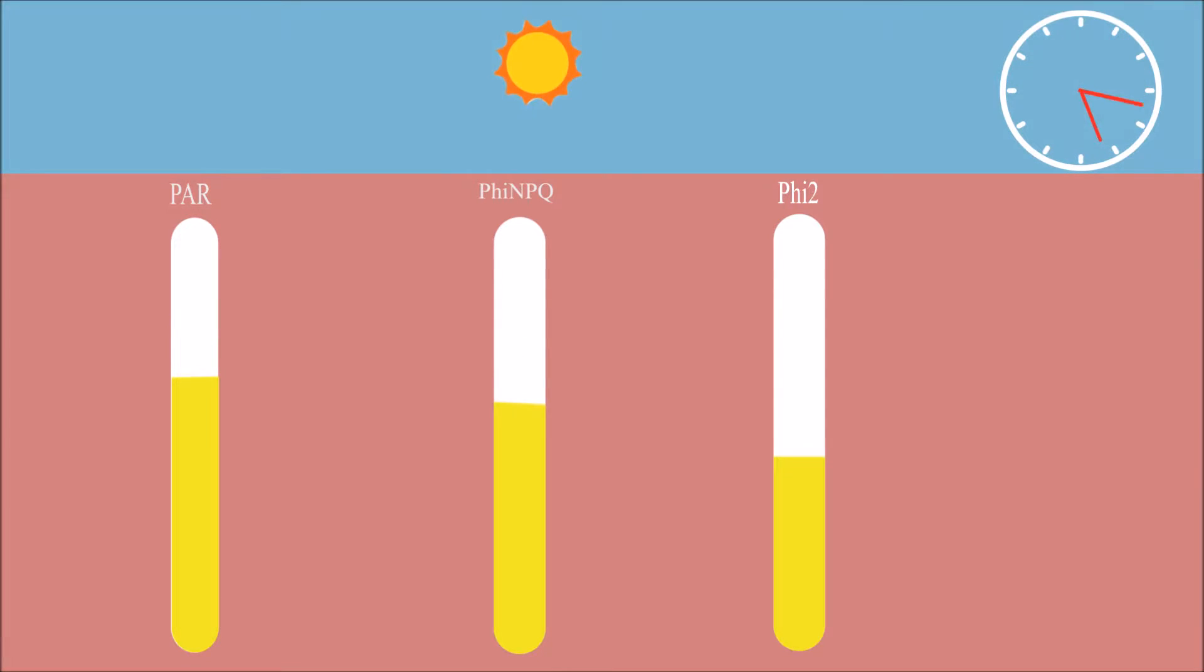It is important to note that the degree to which light intensity affects each of these parameters will be dependent on things like plant stress, genetic variation, and crop management.